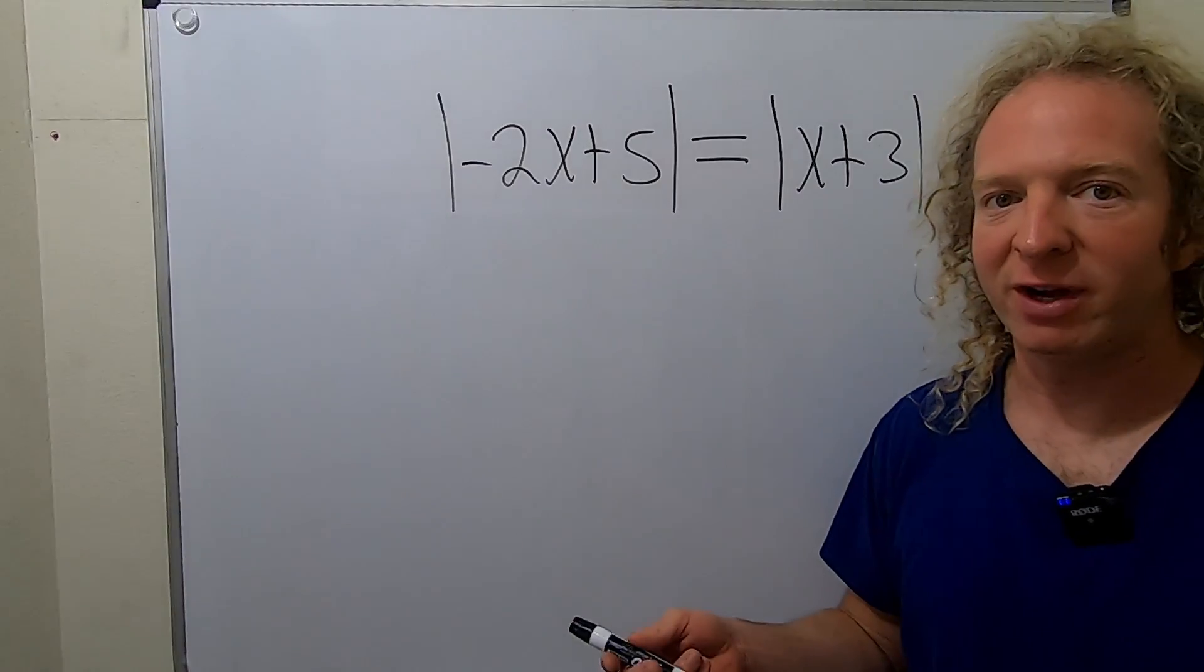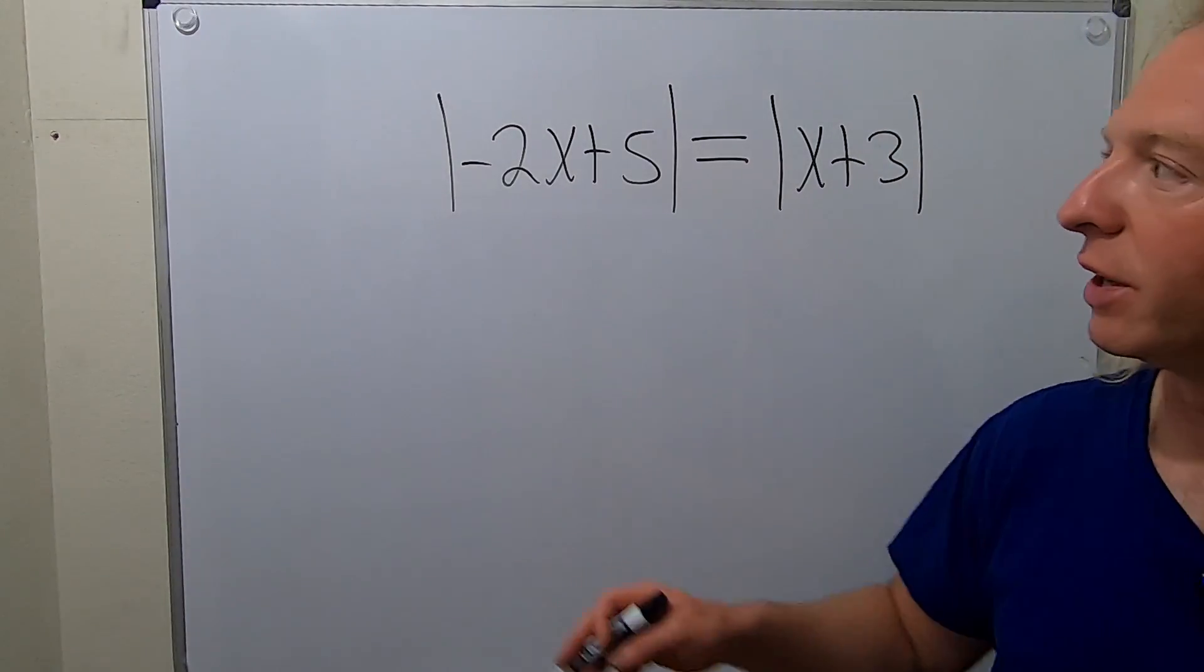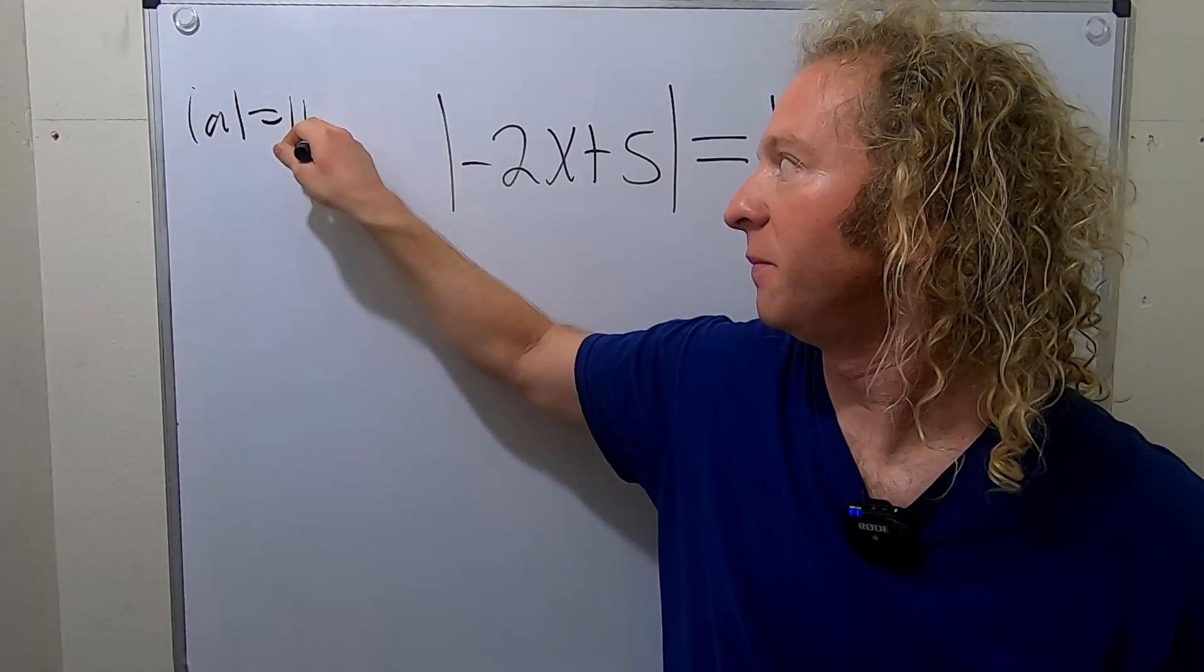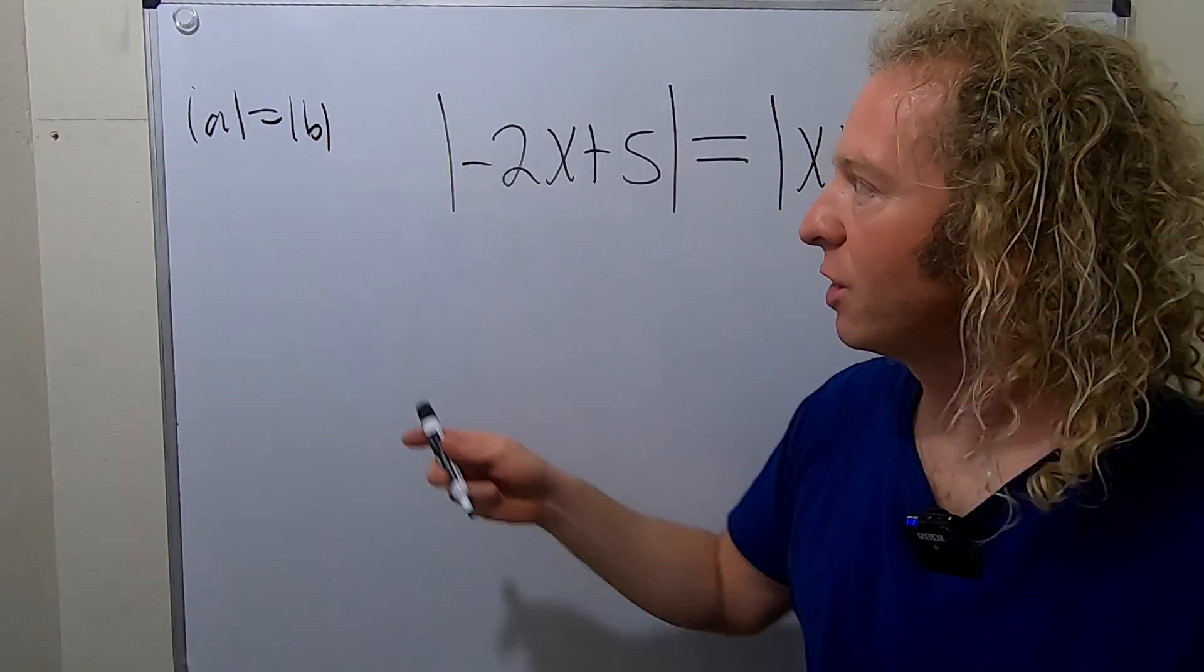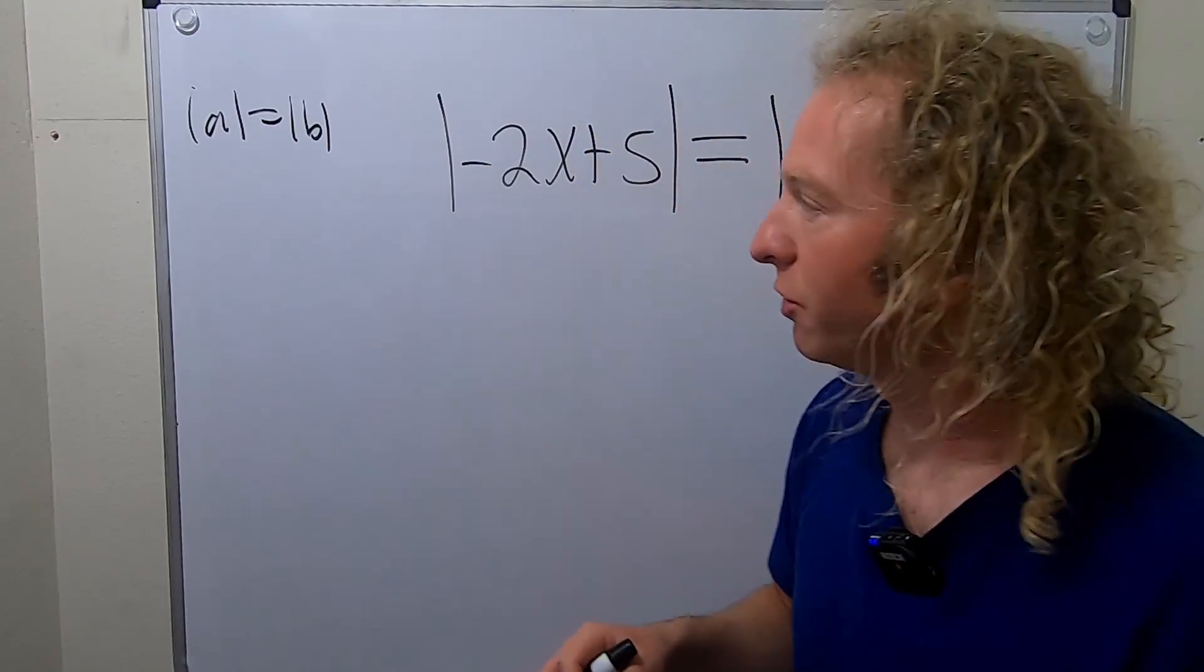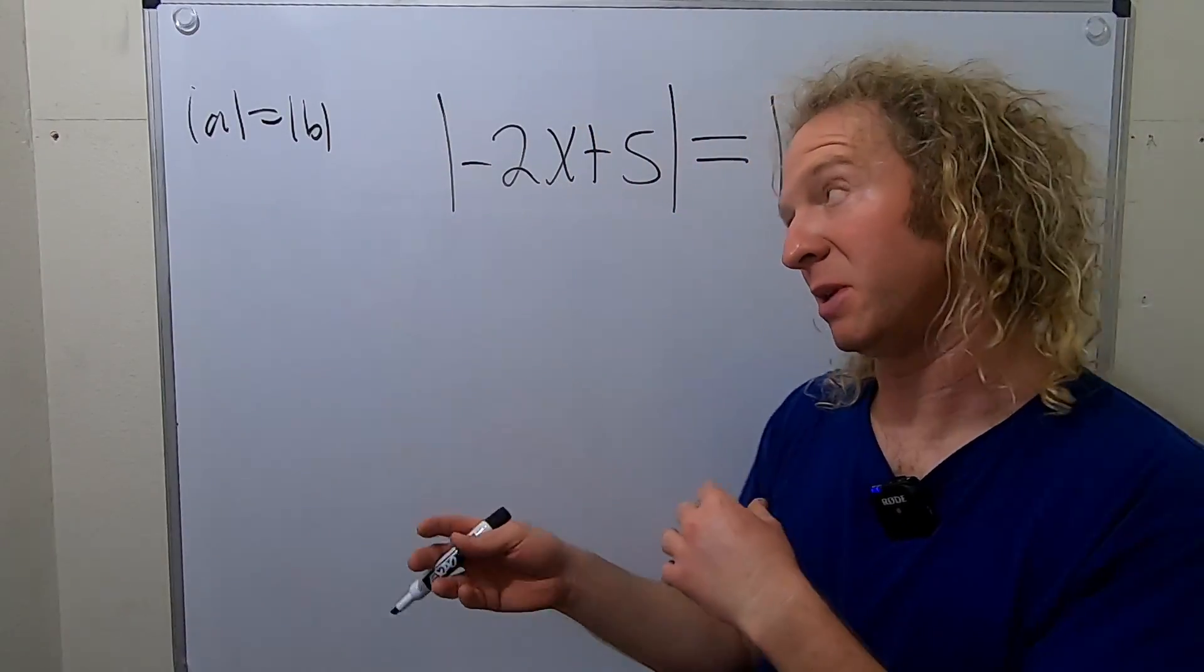So to do that, we have to drop the absolute values. There's a rule you can use. If you have the absolute value of A equal to the absolute value of B, what this is saying is that you have two numbers and their distance from zero is the same. So these numbers must be the same number or they must be opposites.